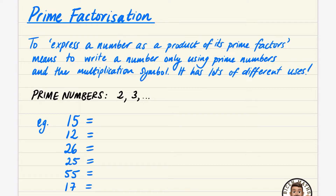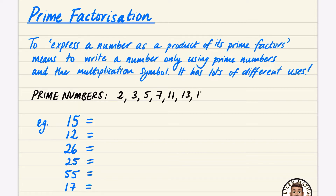You should know what the prime numbers are. After three comes five, seven — nine is not a prime number because it's three times three. We then have 11, 13 — not 15 because it's three times five — then 17, 19, 23, 29, and they keep going. Prime numbers only have two factors: themselves and one.